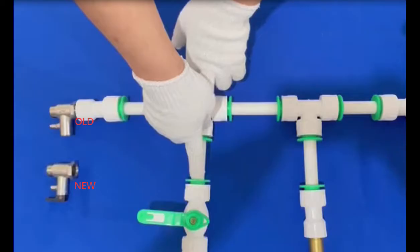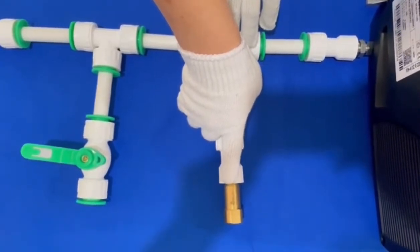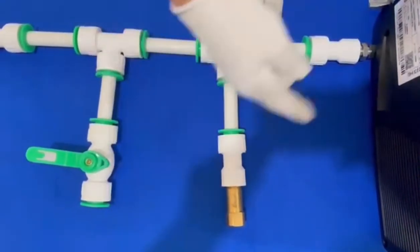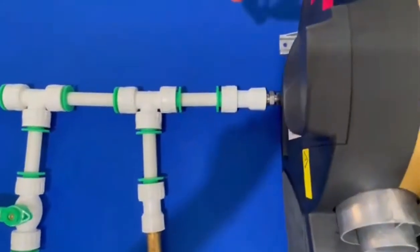This is the anti-frozen valve. It will help you drain the water to the outside when the environment temperature is 1 to 4 degrees. It should be installed as the lowest position too.